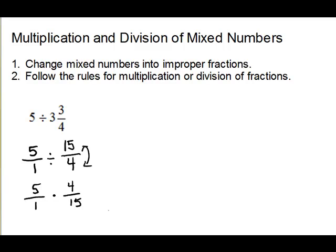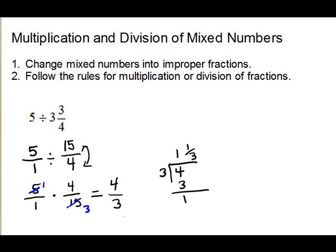Once we have multiplication of fractions, cancel on the diagonal if you have common factors. On this diagonal we have a common factor of 5: 5 goes into 5 one time and into 15 three times. On the other diagonal there's nothing to divide out. Now multiply across: 1 times 4 is 4, and 1 times 3 is 3, so the answer is 4 thirds. The book will switch it to a mixed number: 3 into 4 goes one time, multiply back, subtract, remainder over divisor. So 4 thirds equals 1 and 1 third.